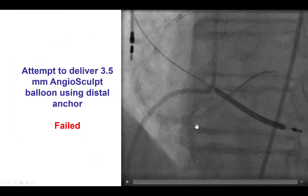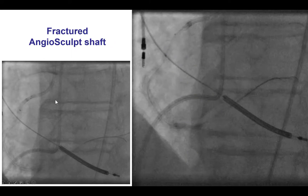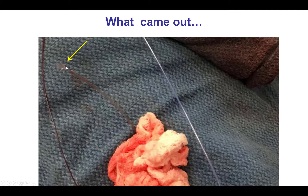We tried this in this particular case — we inflated a balloon inside the distal RCA lesion and tried to deliver a 3.5 mm angiosculpt. However, we could not deliver it. And what is more, when we were trying to pull the angiosculpt back, it was very, very hard, and we probably pulled a little too hard, because the shaft of the balloon came out — however, the tip of the balloon was not there. So we had a fracture of the angiosculpt shaft, and this is how it looked.